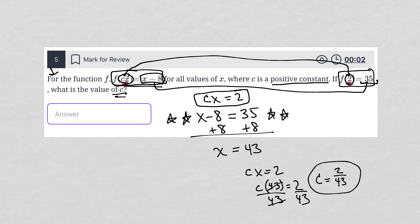So hopefully that makes sense. If it doesn't, please leave a comment under the video. And that's it. c is equal to 2 over 43.